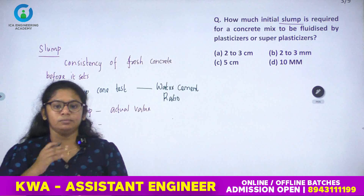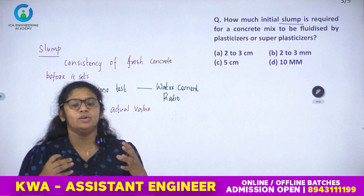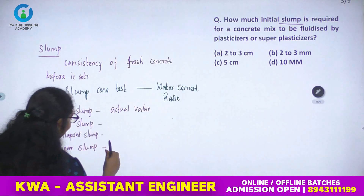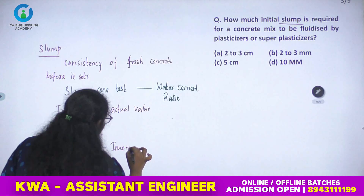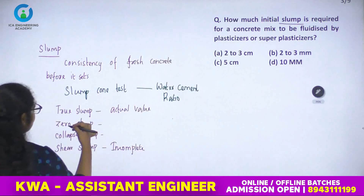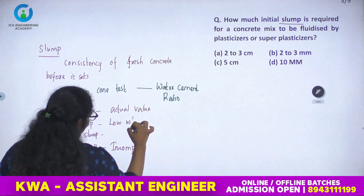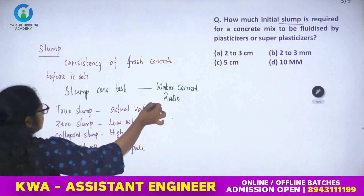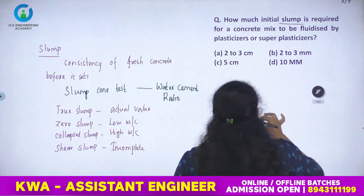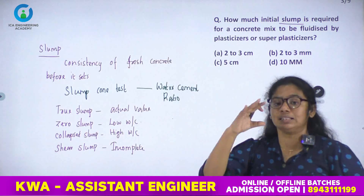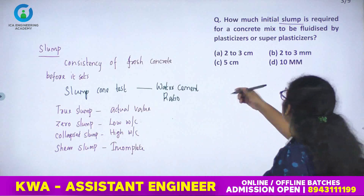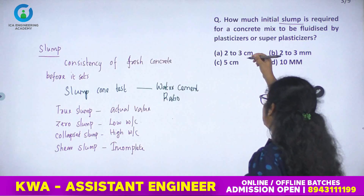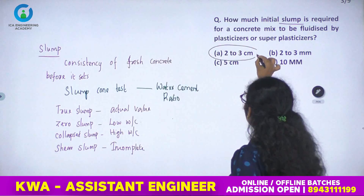Shear slump means the result is incomplete, so the test must be repeated. Zero slump corresponds to a low water-cement ratio and collapsed slump to a high water-cement ratio. The initial slump required for fluidization by plasticizer or superplasticizer is 2 to 3 centimeters.